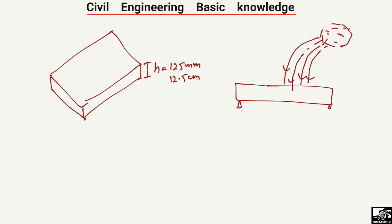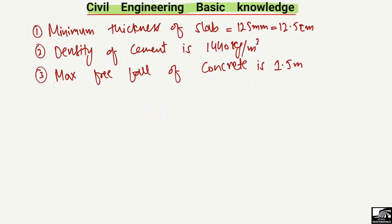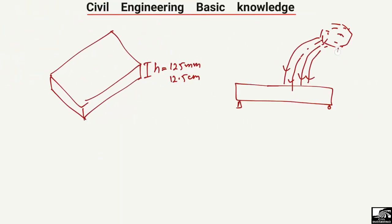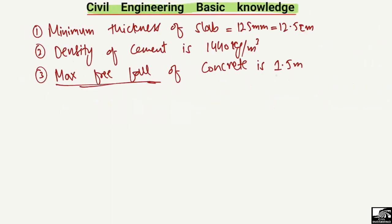The maximum freefall height of concrete should be 1.5 meters. We should not drop concrete into a beam from 2 or 3 meters, because increasing the freefall height can cause problems like segregation or bleeding of the concrete. To avoid these problems, the freefall height in construction must not exceed 1.5 meters.